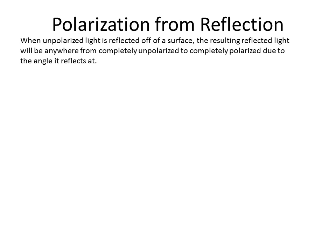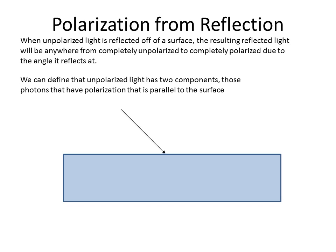When we have unpolarized light and it reflects off of a surface, the resulting light will be anywhere in a range from completely unpolarized to completely polarized. It really depends on the angle that it reflects off.